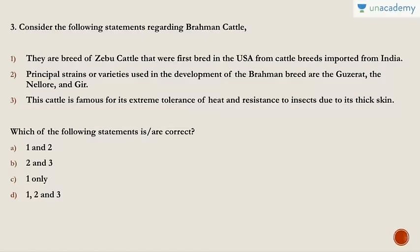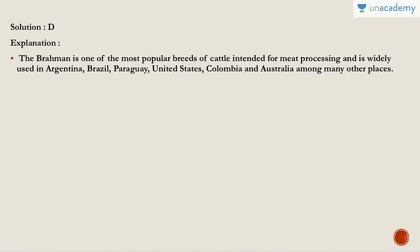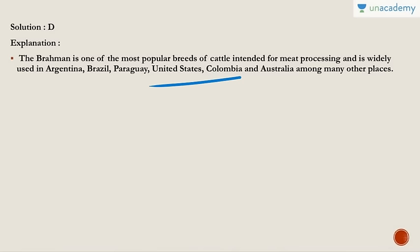Question three: Consider the following statements regarding Brahman cattle. They are a breed of zebu cattle first bred in the USA from cattle breeds imported from India. The principal strains used in the development of the Brahman breed are the Guzerat, Nelore, and Gir. This cattle is famous for its extreme tolerance of heat and resistance to insects due to its thick skin. All statements are correct, so the answer is one, two and three. The Brahman is one of the most popular breeds for meat processing and is widely used in Argentina, Brazil, Paraguay, the United States, Colombia, and Australia.